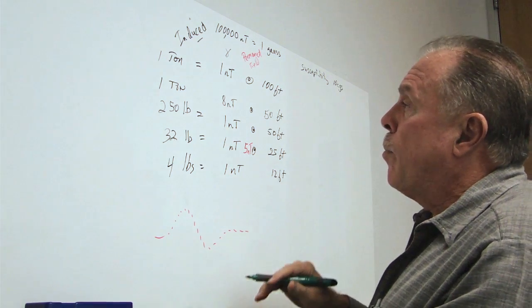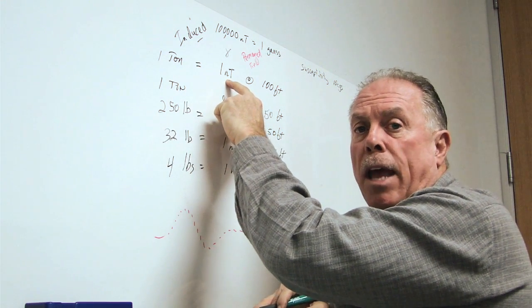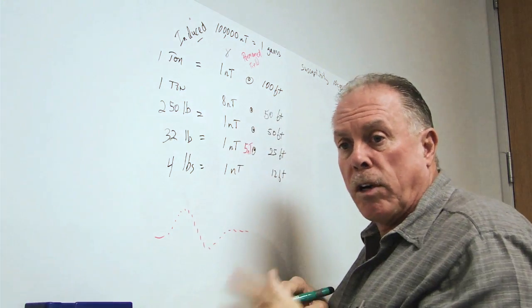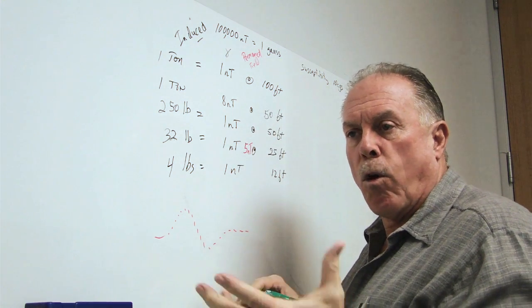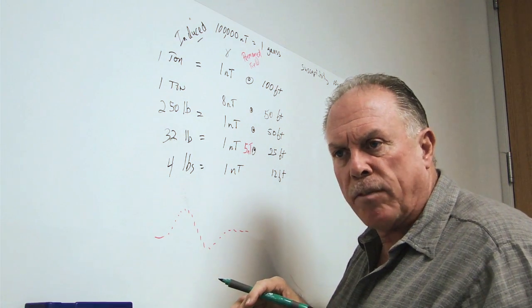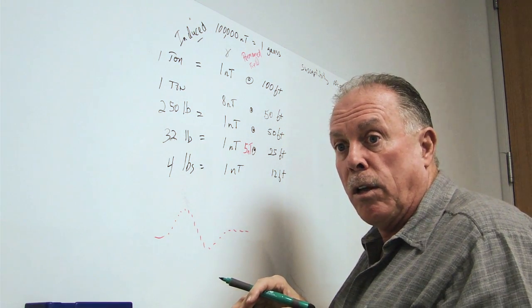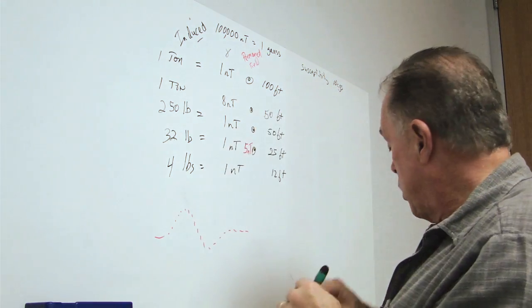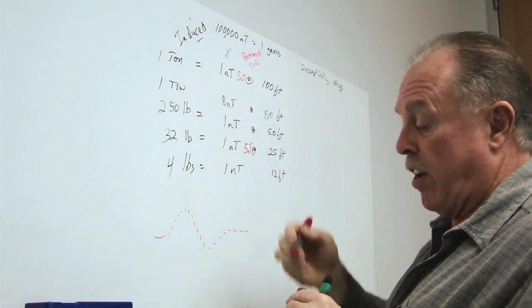Perhaps the car weighs one ton, so we would expect to see one nanotesla at 100 feet. But parts of the car are hard steel and they were formed in a foundry like the crankshaft. So there are permanent magnetic fields associated with the steel parts of the engine, and this number may then become as much as five nanotesla at 100 feet.